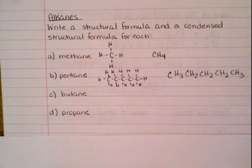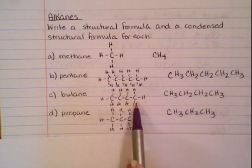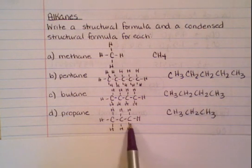So what you want to do is you want to try the next two, and then come back and get the answer. So when you do butane, remember that butane is four carbons. So you set up your four carbons, add your hydrogens, and then write your condensed. Propane has three carbons. Attach all of your hydrogens, and then write the condensed.